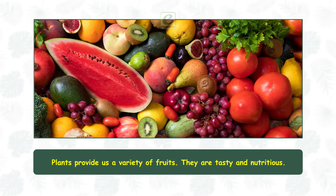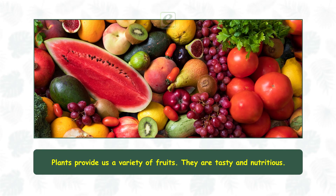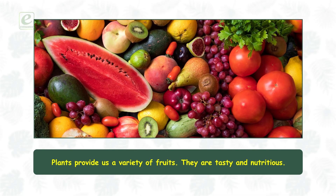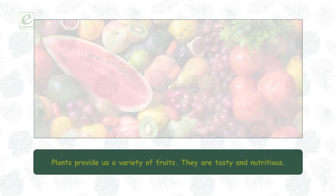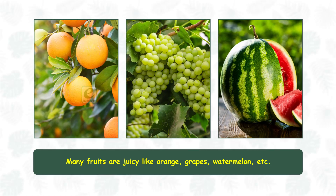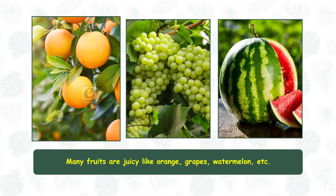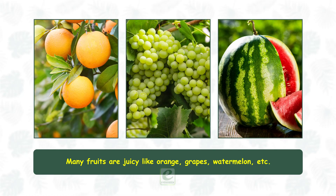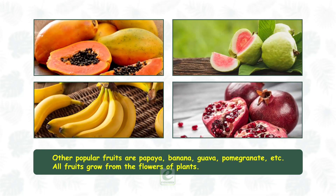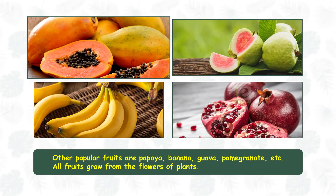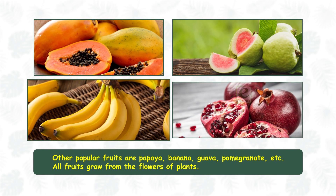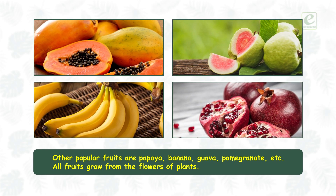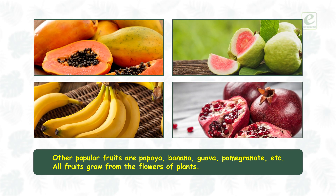Plants provide us a variety of fruits. They are tasty and nutritious. Many fruits are juicy, like orange, grapes, watermelon, etc. Other popular fruits are papaya, banana, guava, pomegranate, etc. All fruits grow from the flowers of plants.